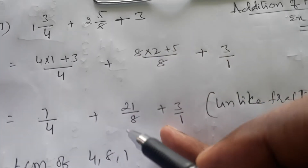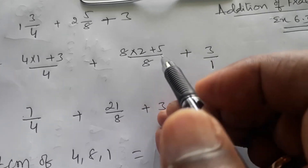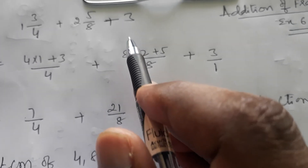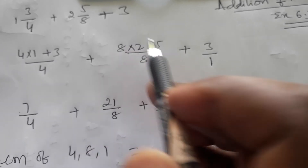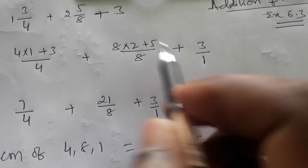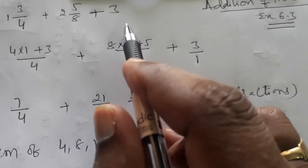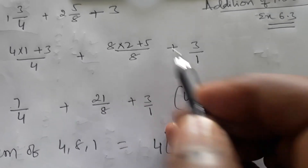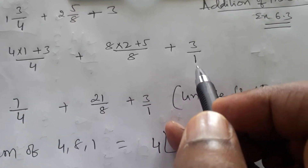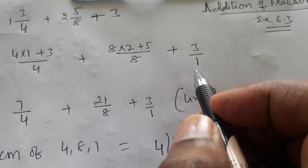The next number is 3. As I told in the previous class, if only a whole number is given, you can write its denominator as 1 — because for any number the denominator is 1. Since we are doing addition of fractions, we write 3 as the fraction 3/1.